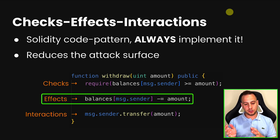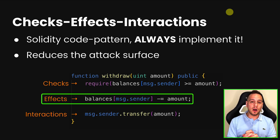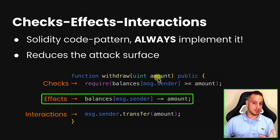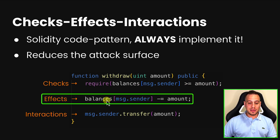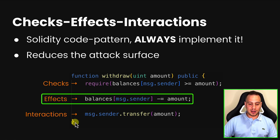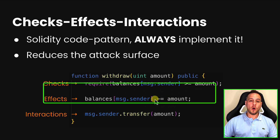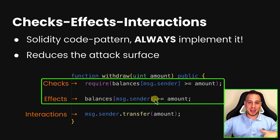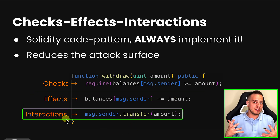As you can see in the following example: in the checks phase, we first make sure that the balance of the msg.sender is greater than or equal to the amount the user wishes to withdraw. The amount is an arbitrary parameter sent to the function. Then the second step is the effect — we change the state. We change the storage, in this case reducing the amount the user wishes to withdraw from their balance by updating the balances mapping.